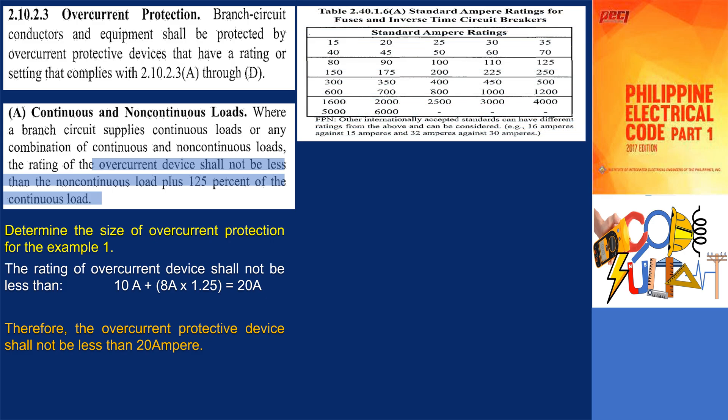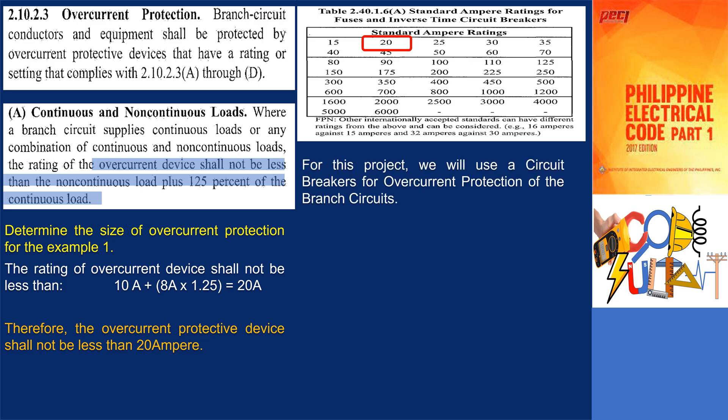The standard ampere ratings of fuses and inverse time circuit breakers shall be in table 2.40.1.6a. For this example, the branch circuit overcurrent protective device shall be a circuit breaker. Therefore, use a 20-ampere rated inverse time circuit breaker.